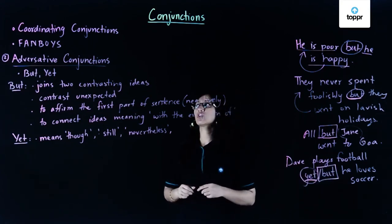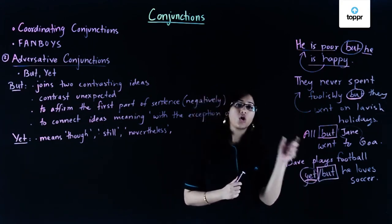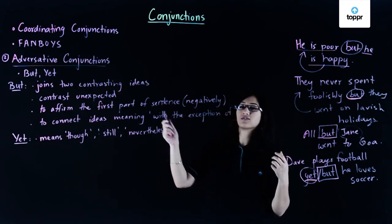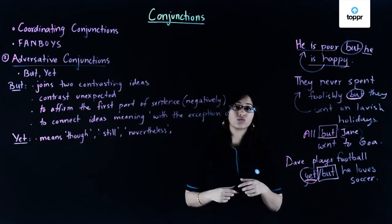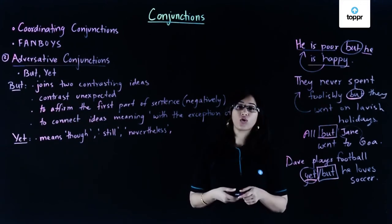So here we have taken a look at how we show contrasting statements in a sentence using adversative conjunctions. Next we move on to another type of coordinating conjunction.